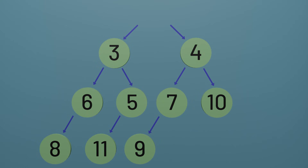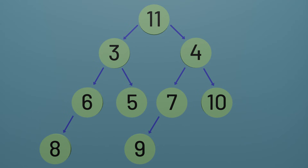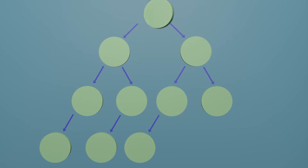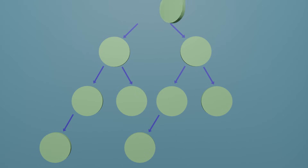As we did with insertion, let's first get the heap in the correct shape and then worry about satisfying the heap invariant. To get the heap into the correct shape, we can take an element from the bottom layer of the heap and move it to be the new root. Remember that we need to preserve the rules for the shape — so if there's unevenness on the bottom layer we should remove a node that balances the heap, and if it's already even we should remove from the right side first before we remove from the left.